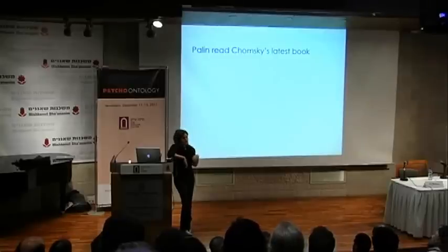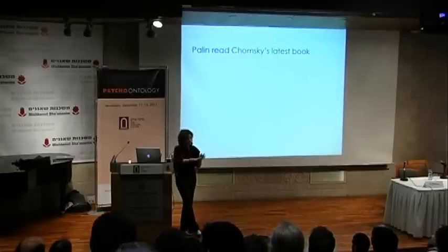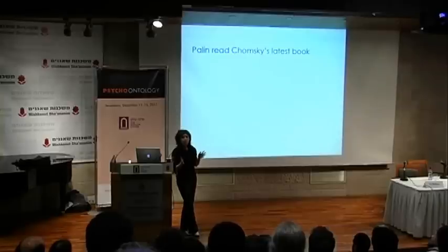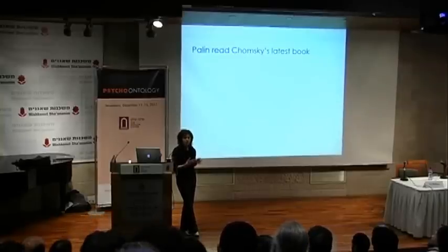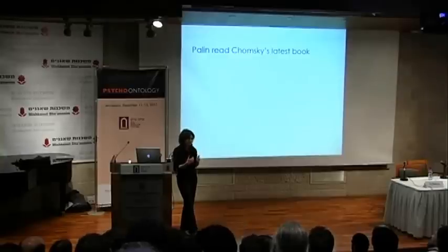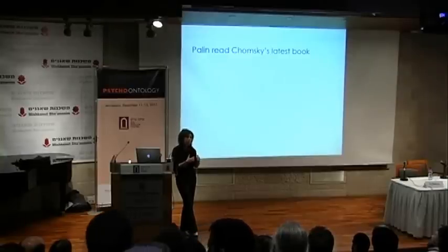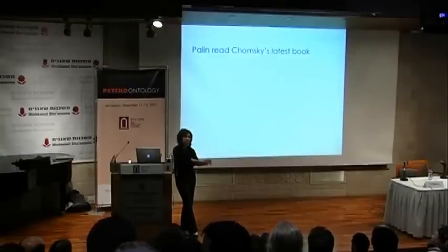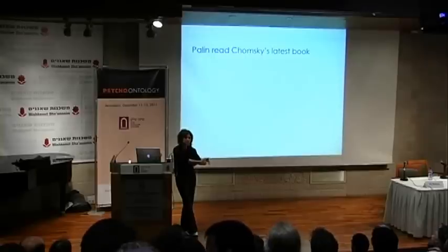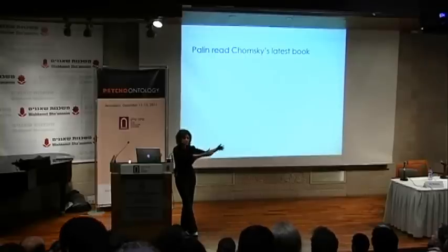In other languages, it's not just that tenses are required, but there are five different past tenses you have to choose from depending on when the event occurred. If it's something in the immediate past, that's one form. If it's something that happened within two weeks, that's another form, and so on.